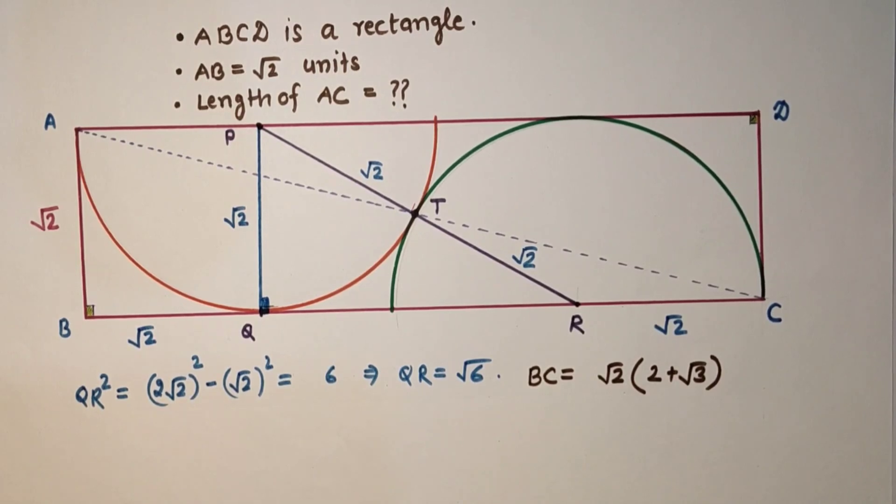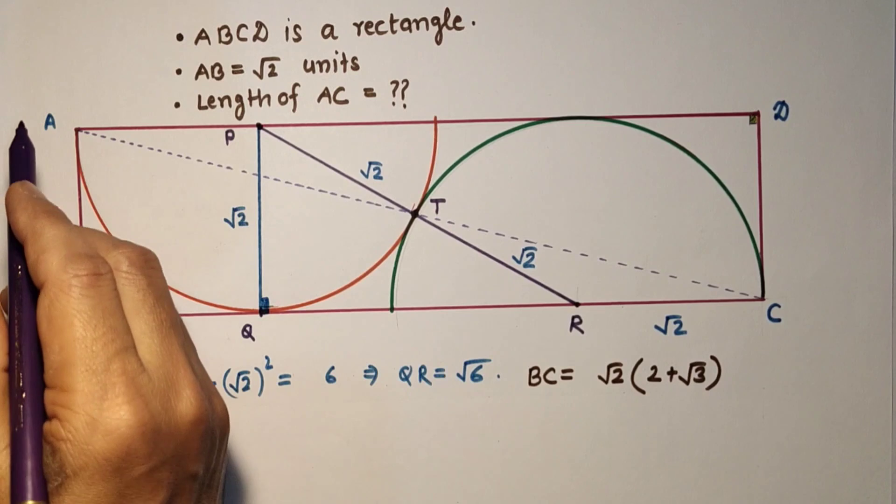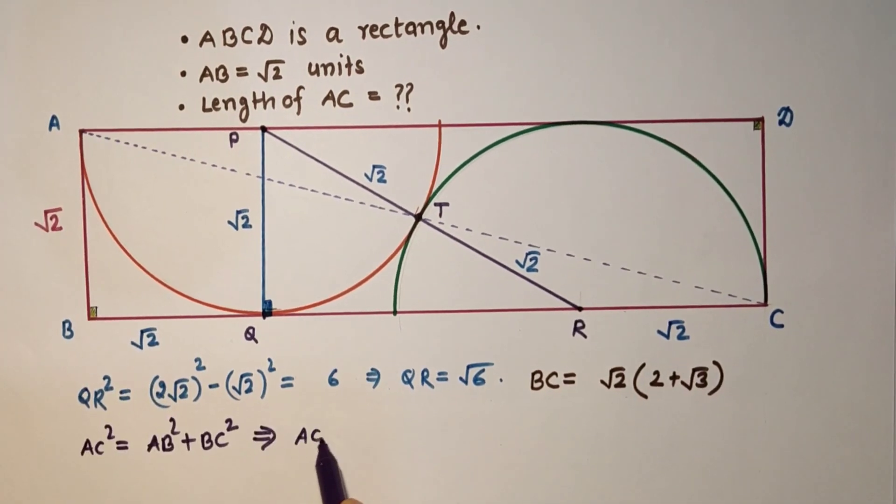Now using Pythagoras theorem in this triangle ABC. AC square is equal to AB square plus BC square.